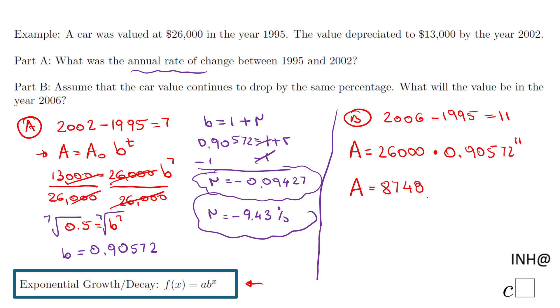That would be the exact value. See how you need to round it if that is the case in your problem, but this is the exact value of the car after 11 years if it keeps depreciating by 9.43 percent every year.